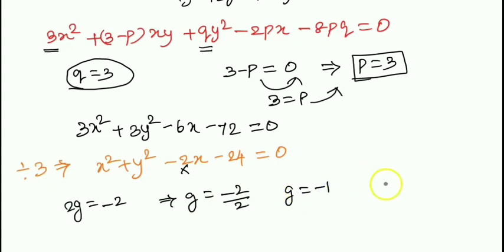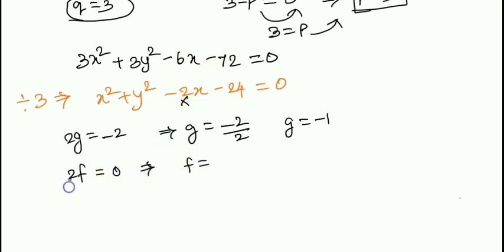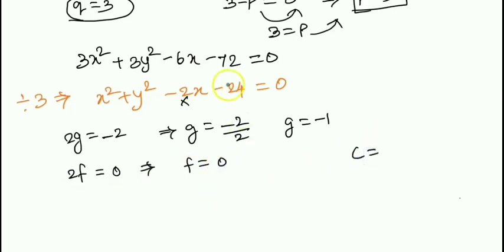From the general equation, the y coefficient gives 2f. Here 2f equals 0, so f equals 0. The constant term gives c, so c equals minus 24.